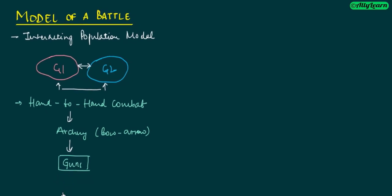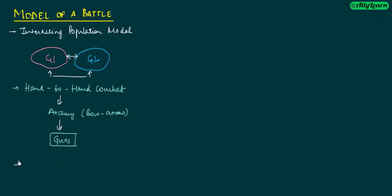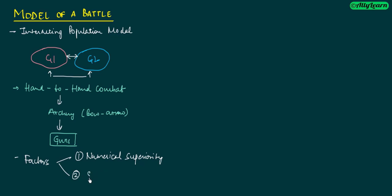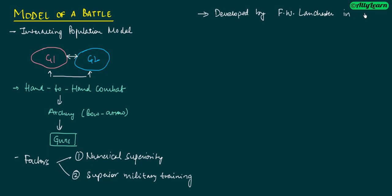If I talk about factors which were important for a battle: one was that your army should be very big, or numerically superior to your enemy — this is numerical superiority. The other was the skill set and training of soldiers — superior military training. These two things were very important. This model is by F.W. Lanchester, developed in the 1920s.